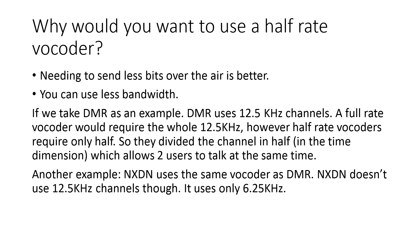Why would you want to use a half-rate vocoder? You can send fewer bits over the air and therefore use less bandwidth. Taking DMR as an example: DMR uses 12.5 kHz channels. A full-rate vocoder would require the whole 12.5 kHz, but with a half-rate vocoder it only requires half the channel. So they divided the channel in half by time — the time dimension — which allows two users to talk at the same time.